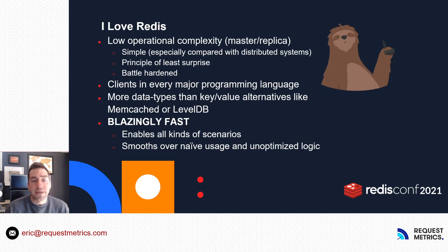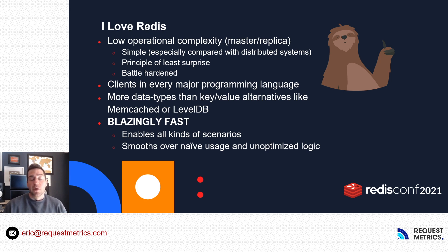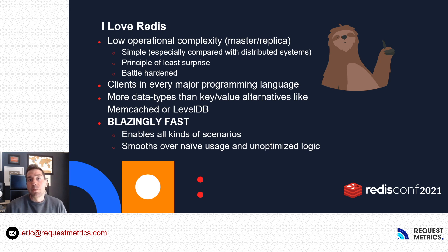Before we get into more details, I want to talk about why I love Redis. As a business founder and chief tech person, when the pager goes off it's my job to fix whatever's wrong. One of the things I love about Redis is that it almost never causes the pager to go off. It has very low operational complexity and overhead. It rarely surprises and it's battle hardened. Almost any programming language can talk to it. There are a lot of flexible data types, and perhaps most importantly, Redis is blazing fast.